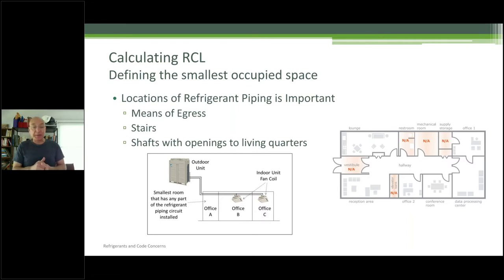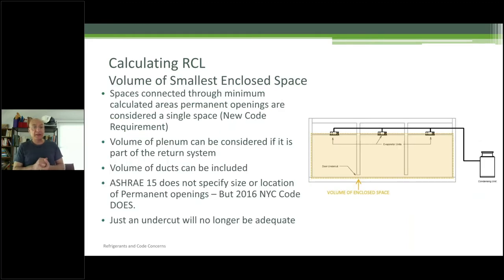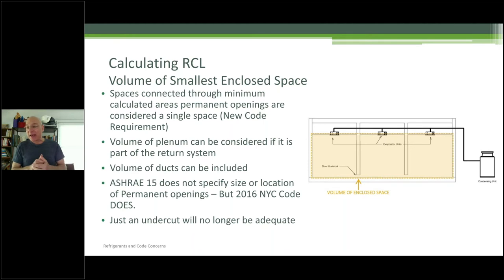RCL calculations need to take the full system charge into account — what is likely to be discharged into one space. Calculating RCL: you've got to define your smallest occupied space and the maximum number. Sometimes it's iterative, depending on the system complexity. You've also got to be careful about means of egress — stairs, shafts with openings to living quarters — it's not a good idea to run refrigerant piping in stairs. A question came in: is introducing door undercuts enough to use the whole apartment as a room for charge-safety calculations? That's exactly what I'm getting to.